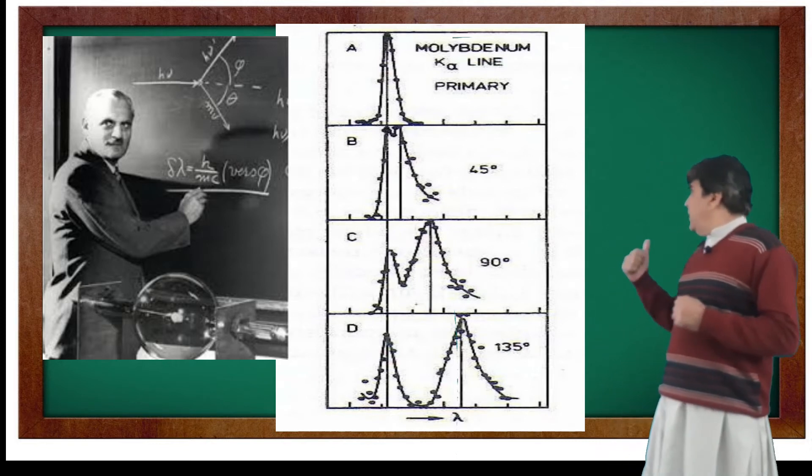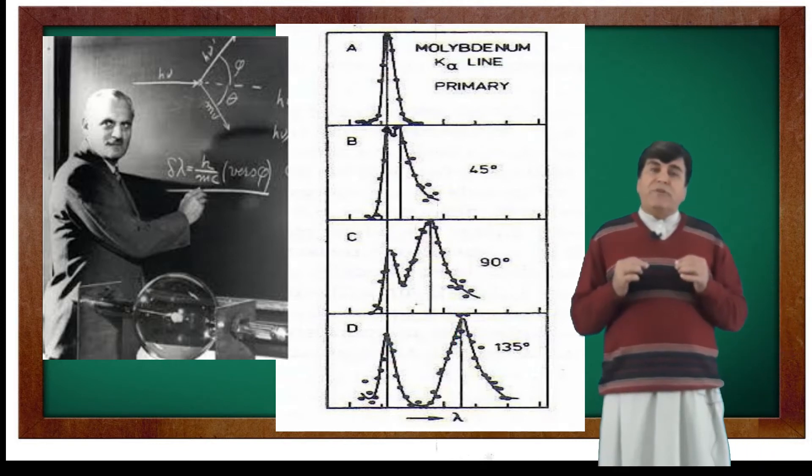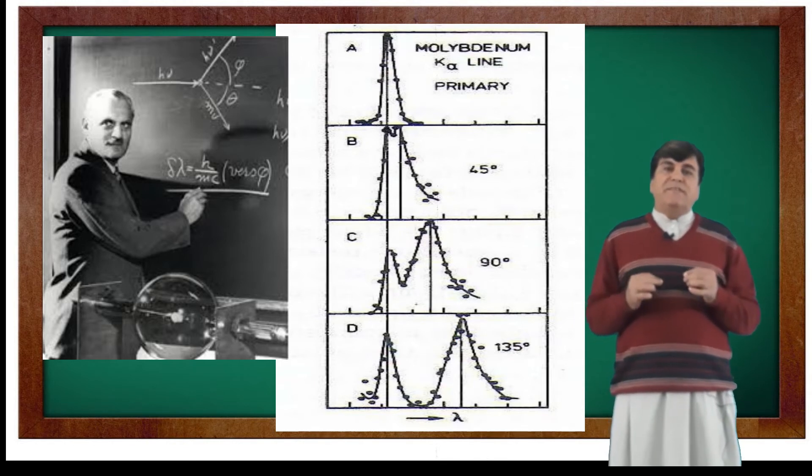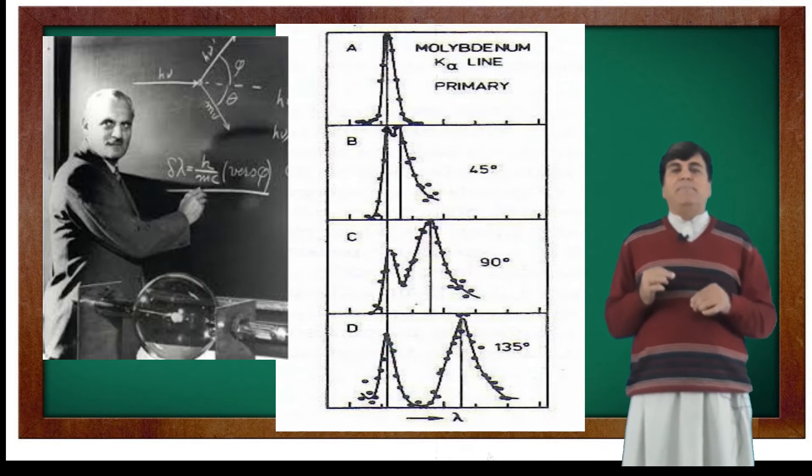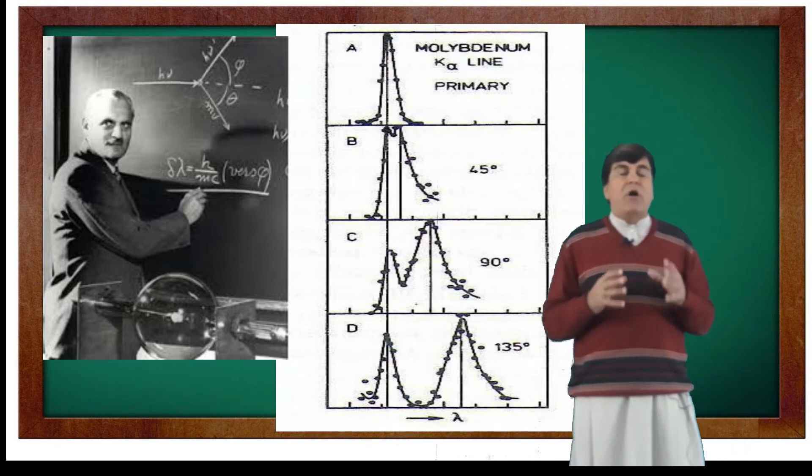In figure B, at an angle of 45 degrees to the direction of incident beam, in addition to the peak at original wavelength, another peak appears at a bit longer wavelength.